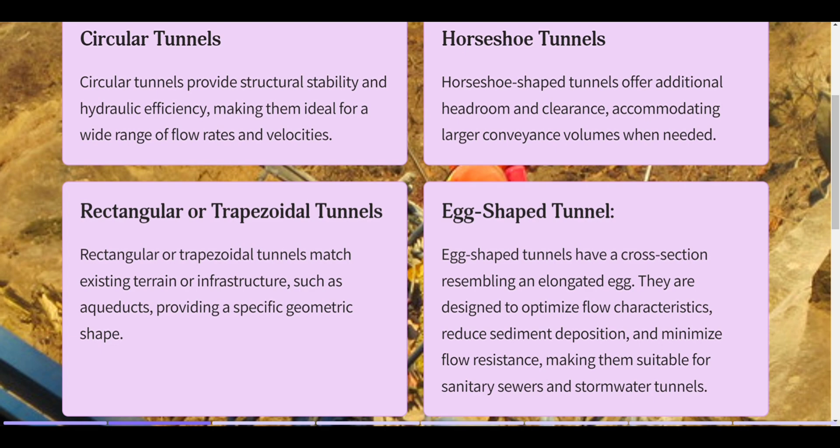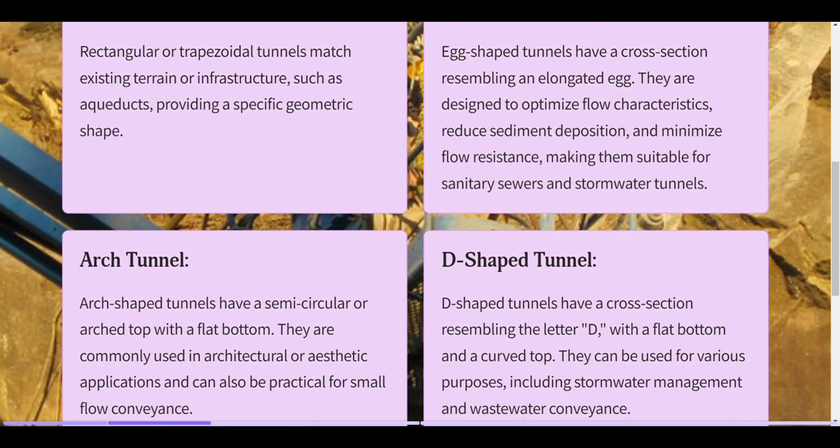Rectangular or trapezoidal tunnels match existing terrain or infrastructure, such as aqueducts, providing a specific geometric shape. Egg-shaped tunnels have a cross-section resembling an elongated egg. They are designed to optimize flow characteristics, reduce sediment deposition, and minimize flow resistance, making them suitable for sanitary sewers and stormwater tunnels.